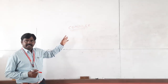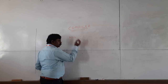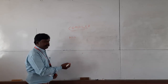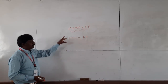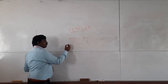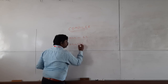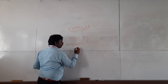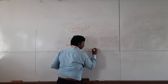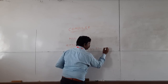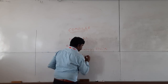Basically, a compiler takes whatever high-level language you write as a source program and converts it into low-level language. That is a compiler. It has two types of phases: the first one is the analysis phase and the second one is the synthesis phase.